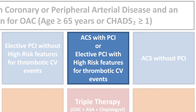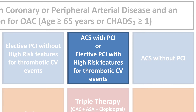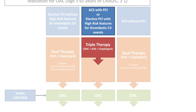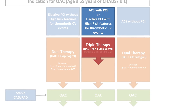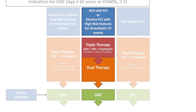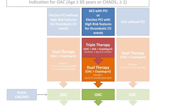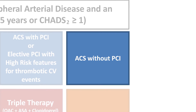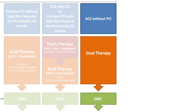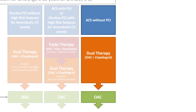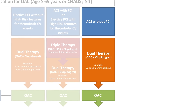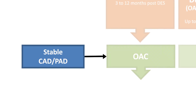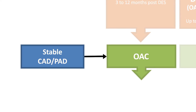AF patients at higher risk of stroke undergoing PCI for an acute coronary syndrome or elective PCI with high-risk thrombotic features should receive an initial regimen of triple therapy — oral anticoagulation plus ASA plus clopidogrel — for up to six months, followed by dual pathway therapy of OAC plus clopidogrel for up to 12 months post-PCI. AF patients at higher risk of stroke with medically managed type 1 myocardial infarction should receive dual pathway therapy of OAC plus clopidogrel, rather than prasugrel or ticagrelor, for 12 months post-ACS. Patients with stable vascular disease and nonvalvular AF who have a high risk of stroke or systemic embolism should receive long-term therapy with OAC alone.